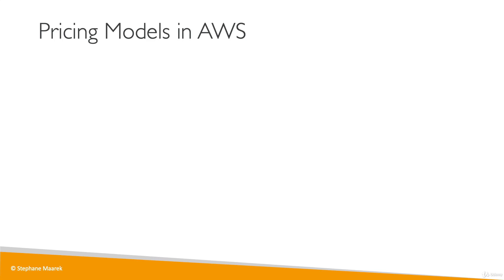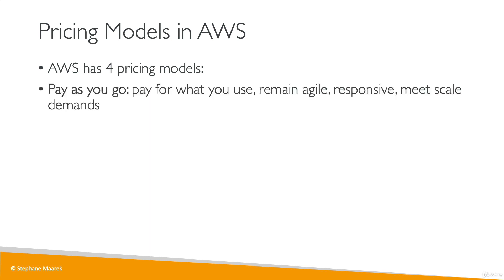Let's talk about pricing models in AWS. AWS has four different pricing models. There is pay-as-you-go, where you pay for what you use. You remain agile because you can start, stop, and delete resources whenever you want. You can be responsive and scale to meet demands as demand happens.